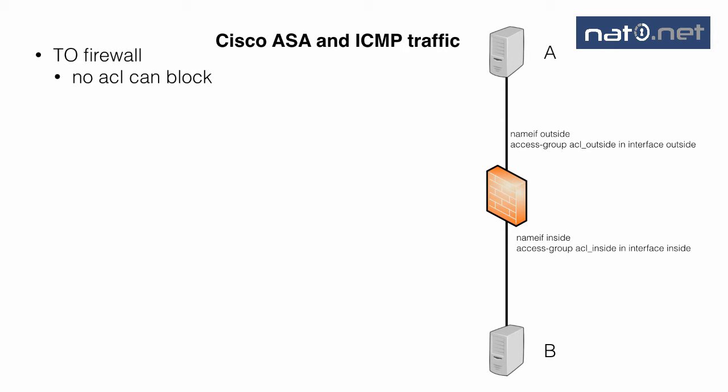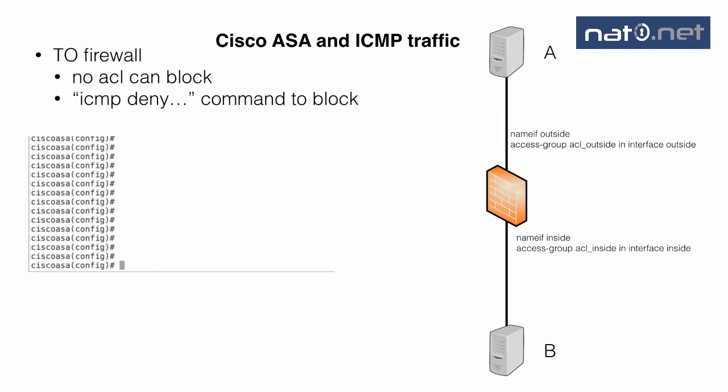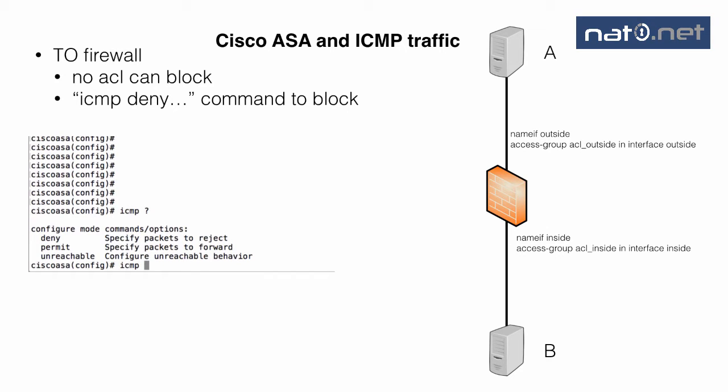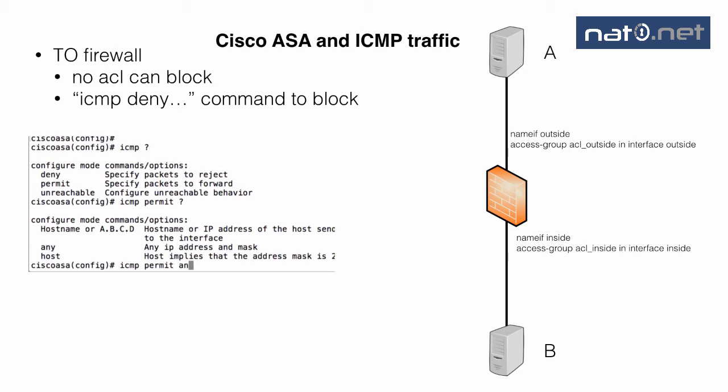First of all, traffic to the firewall cannot be blocked by access lists on the interface. That means that you from host A can ping the outside interface no matter if you deny all ICMP traffic on the access list on the outside. You do not have to open the access list to allow traffic to the firewall. However, there is a global configuration command 'ICMP' which can be used to deny or permit ICMP traffic to the firewall.